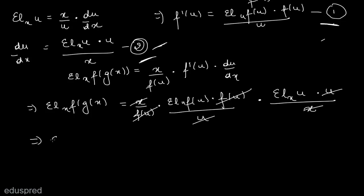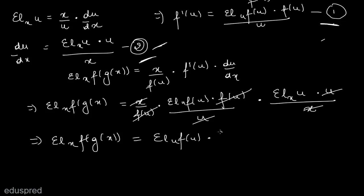This gives us the elasticity of f(g(x)) with respect to x is equal to the elasticity of f(u) with respect to u, multiplied by the elasticity of u with respect to x. Here we have expressed the elasticity of f(g(x)) with respect to x in terms of the elasticity of f(u) with respect to u and the elasticity of u with respect to x.